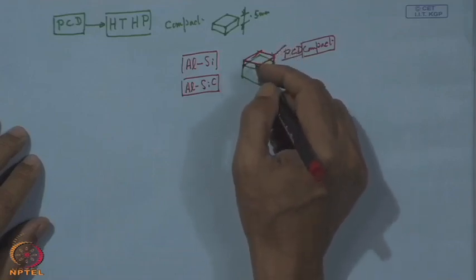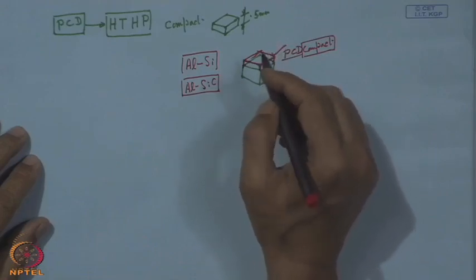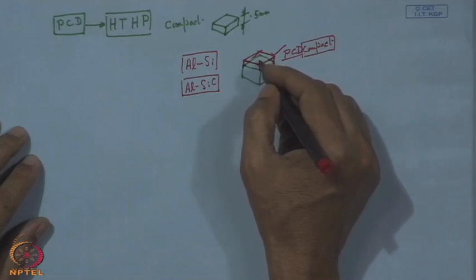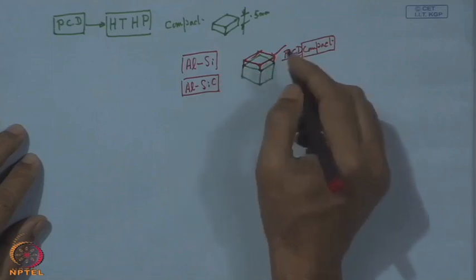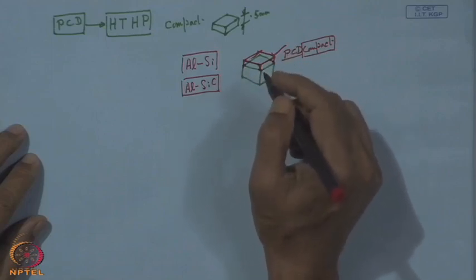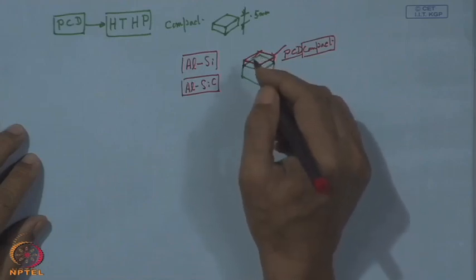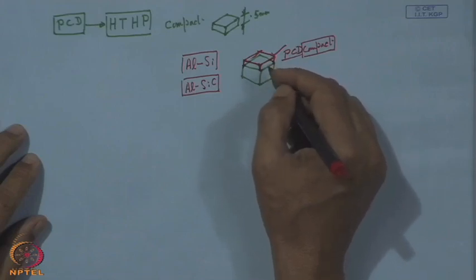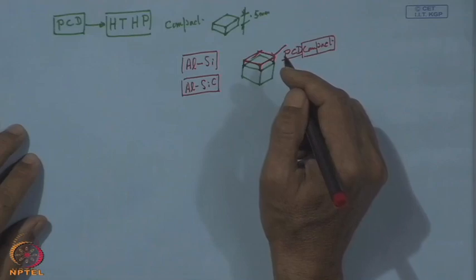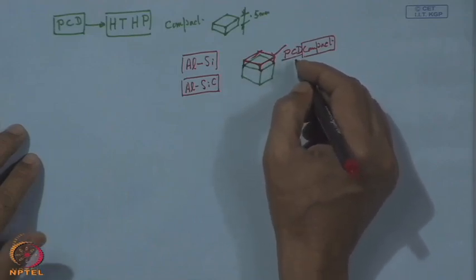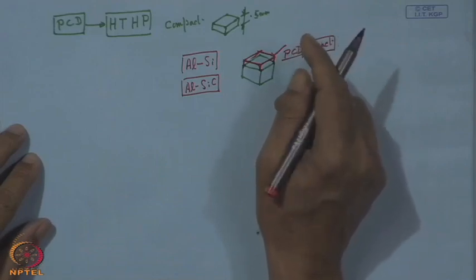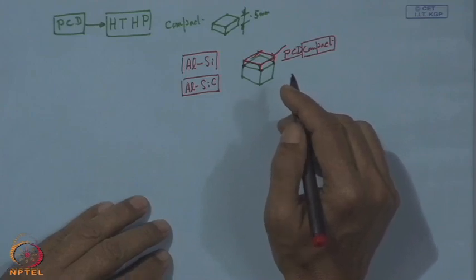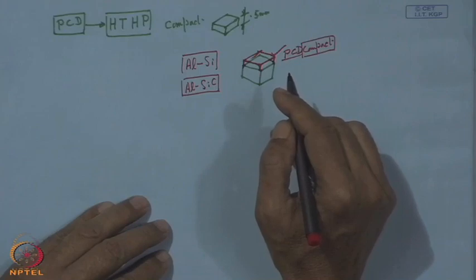However, PCD is not free of weaknesses. The main weakness is that cobalt is often used for binding the diamond powder. When the tool is elevated to a very high temperature during cutting, there is a risk of conversion of diamond to graphite in the presence of cobalt. So high temperature stability has certain limitations. Another disadvantage is the limitation in terms of tool geometry.